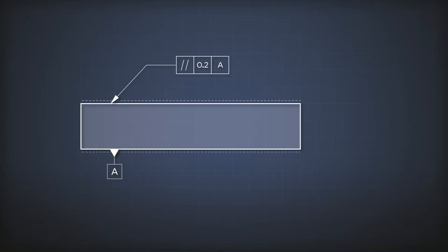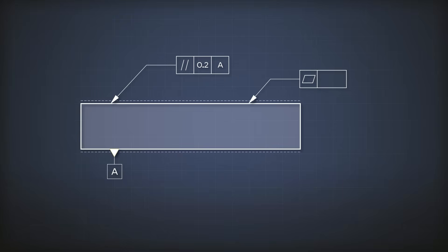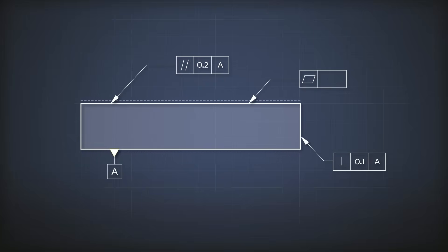Of course, we don't need to put a datum for every specification. If we want to say that a surface should be flat, then we cannot reference it to any datum — all it has to be is flat, not with reference to any other feature. So a specification like this would read: the surface pointed at by the leader should be perpendicular to surface A within a value of 0.1.